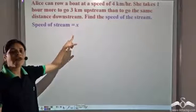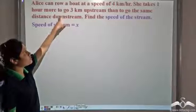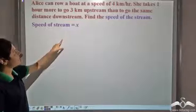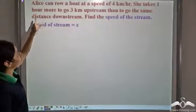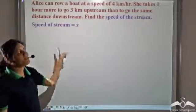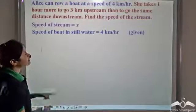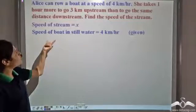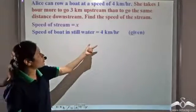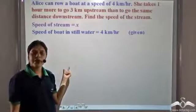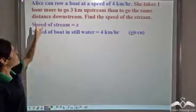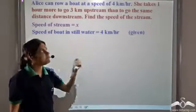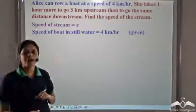Next we see how we can relate what is given to us to the variables to get an equation. It is given that she can row the boat at a speed of 4 km per hour — that is, the speed of the boat in still water is 4 km per hour. Now she takes one more hour to go 3 km upstream than to go the same distance downstream.